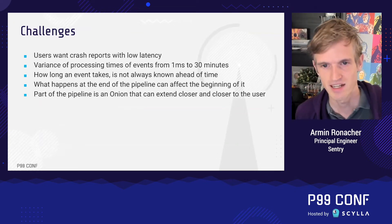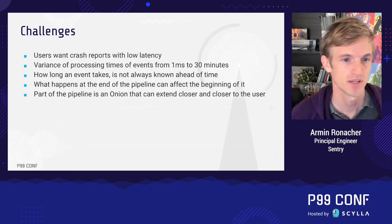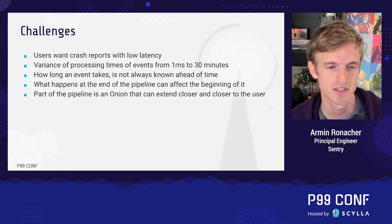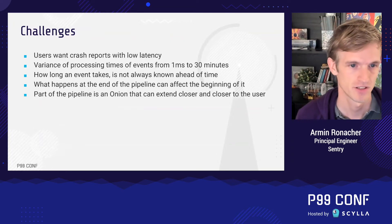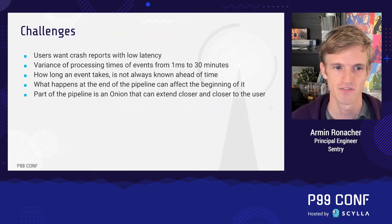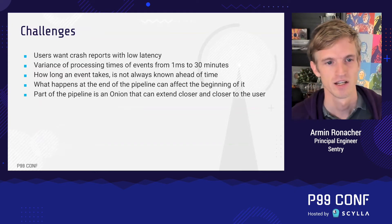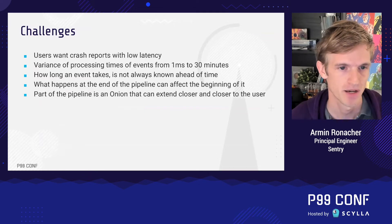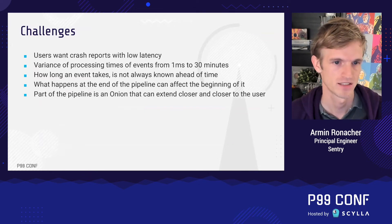Another interesting aspect of how we built this is that when something makes it to the end of the pipeline it might have an effect that influences what happens in the future at the beginning of the pipeline. In particular, the number of events that you manage to get through in a certain period of time can affect your quota going forward. We have a spike protection system in place that will taper off very high unexpected spikes, so we can reduce the inflow of events.